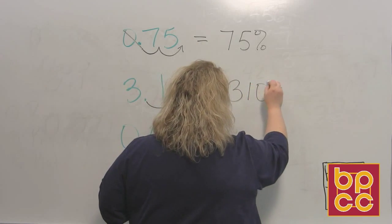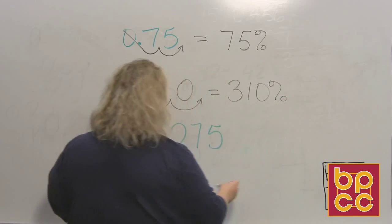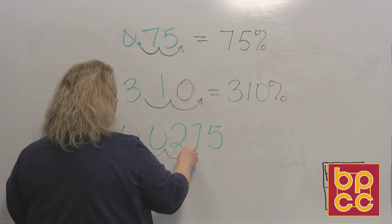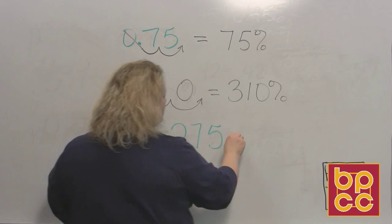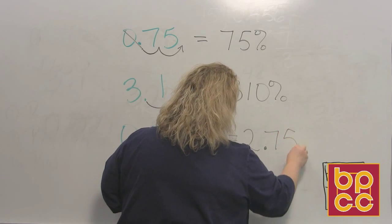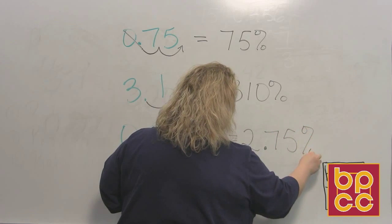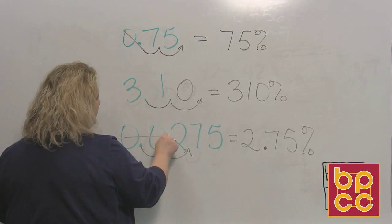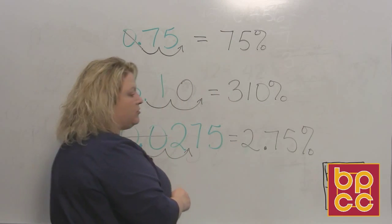And in this last one, I move it one, two places to the right. So, that is 2.75, which is two and seventy-five hundredths. So, 2.75%. And again, these two zeros, you don't need them, so you just cross them off.